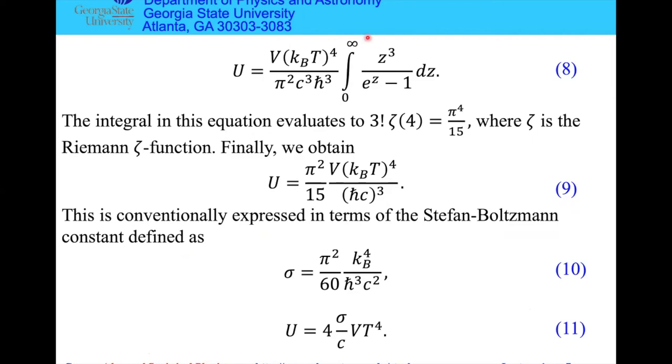Now the integral is dimensionless. Temperature is a coefficient to the power of four. The fourth power comes from third power here and first power here. This very characteristic dependence of the energy of the field proportional to temperature to the fourth power shows it depends very strongly on temperature. The integral is a standard function: 3 factorial multiplied by zeta of 4, which is π⁴/15. Zeta is the Riemann zeta function.